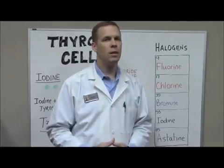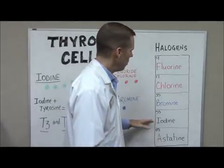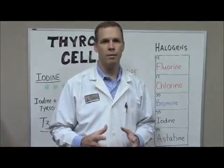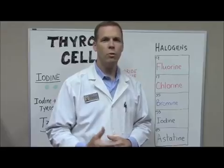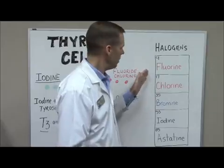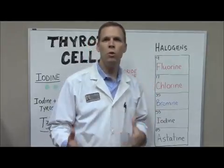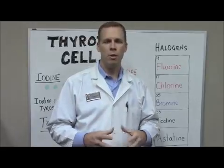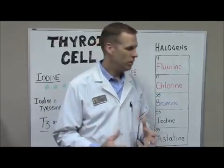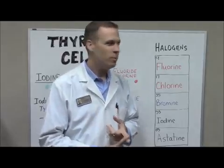Iodine is absolutely needed in order to make thyroid hormone. Also in that column are some things that are in the same family as iodine — they look very similar to iodine to your body. Fluorine or fluoride is one of them; chlorine or chloride and bromine or bromide are all very similar chemically to iodine. So why does that matter? We're going to go over that now.